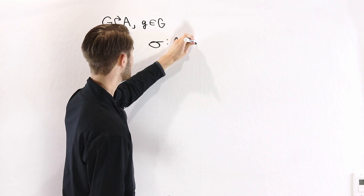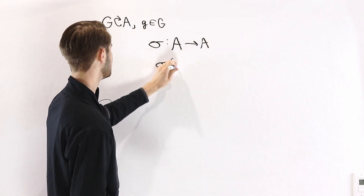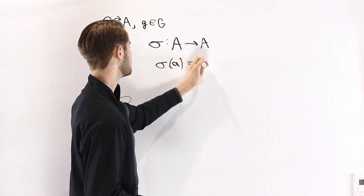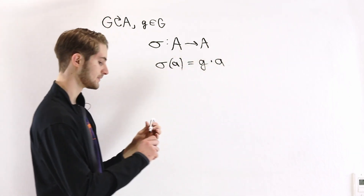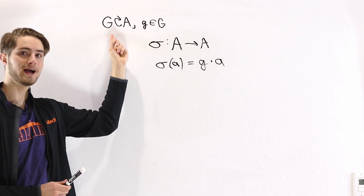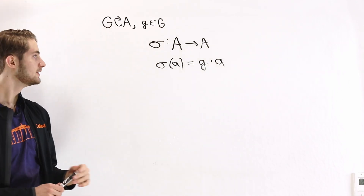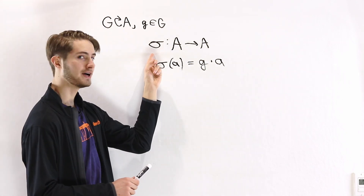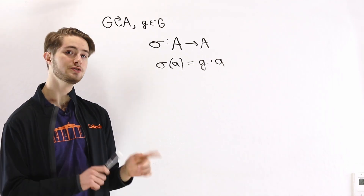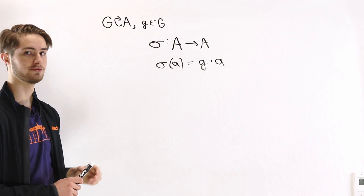σ goes from A to itself, defined by σ(a) = g·a, where this g·a comes from the group action on A. We're going to show that this map σ must be a bijection, and to do that we're going to show that it has a two-sided inverse.